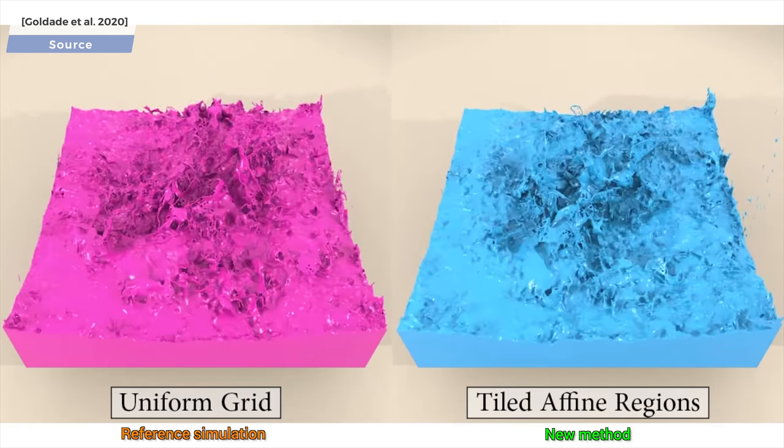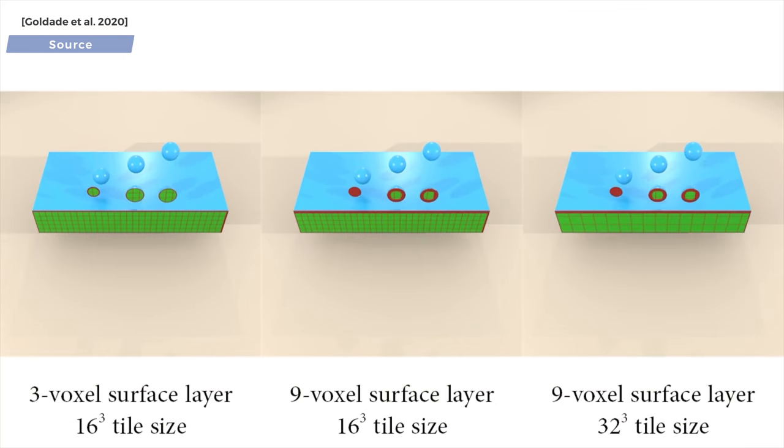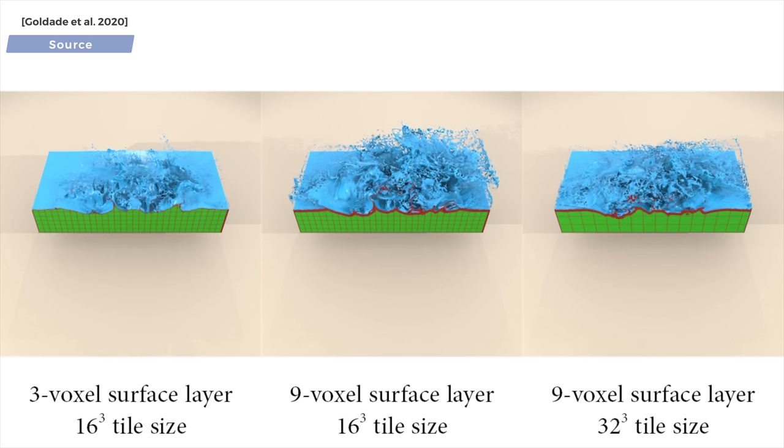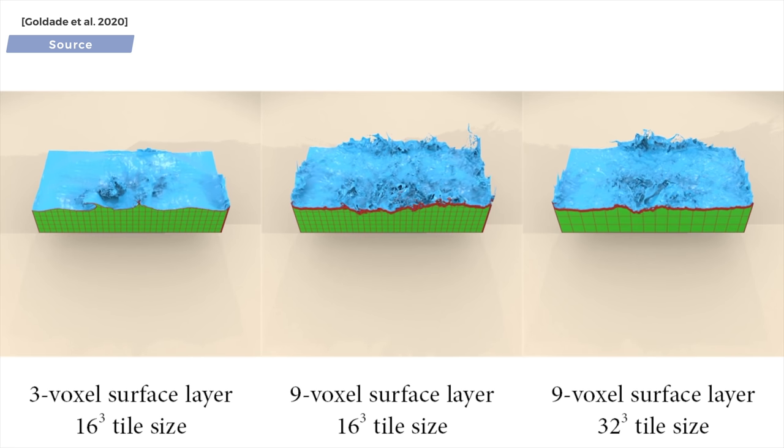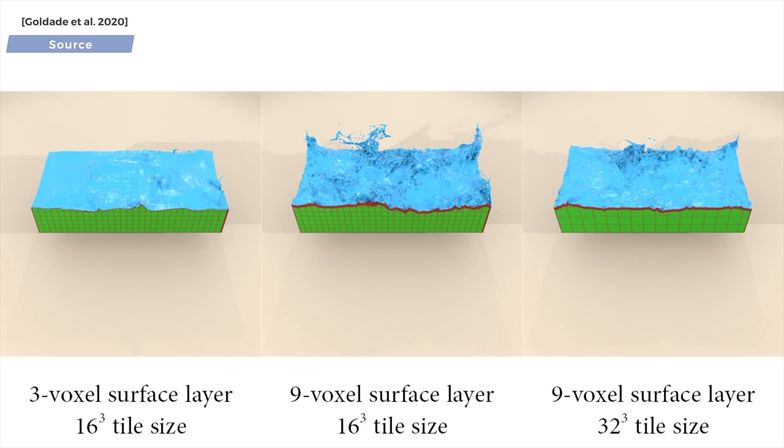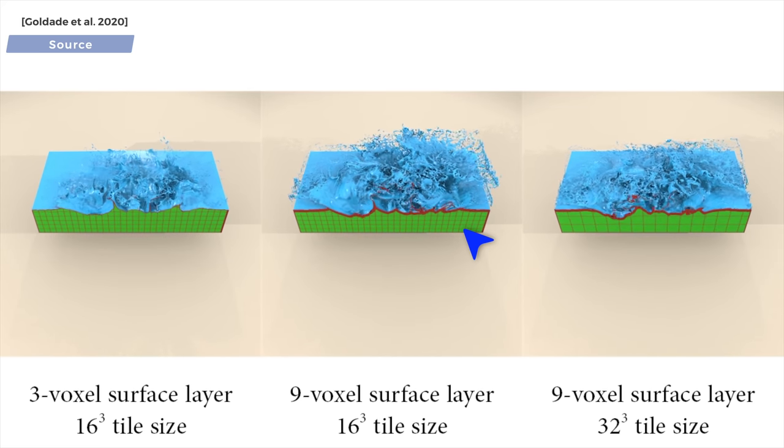If you have a look at the paper in the video description, you will see how it simplifies the simulation by finding a way to identify regions of the simulation domain where not a lot is happening, and coarsen the simulation there. These are the green regions that you see here, and the paper refers to them as affine regions.